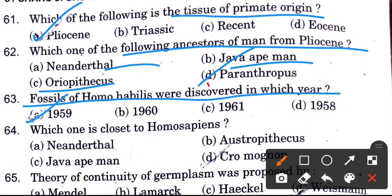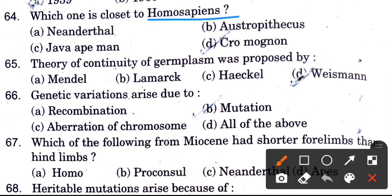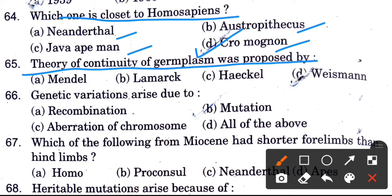Fossils of Homo habilis were discovered in which year? The answer is 1979. Which one is closest to Homo sapiens? Options are Neanderthal, Australopithecus, Java Ape Man, and Cro-Magnon. The answer is Cro-Magnon. Theory of continuity of germplasm was proposed by — options are Mendel, Lamarck, Haeckel, and Weismann. The answer is Weismann.